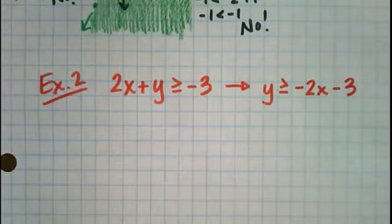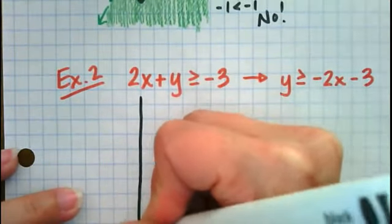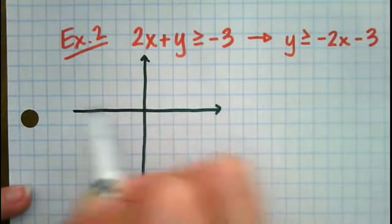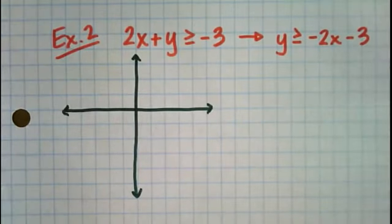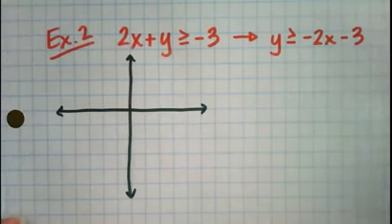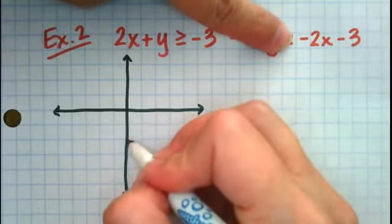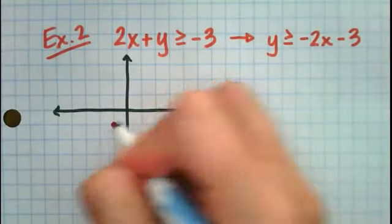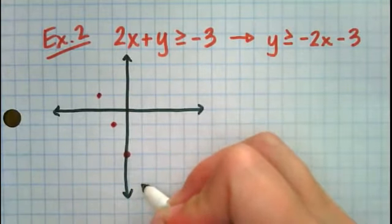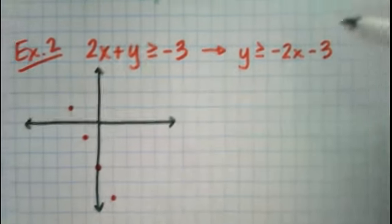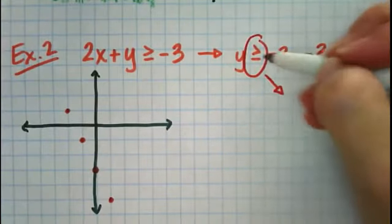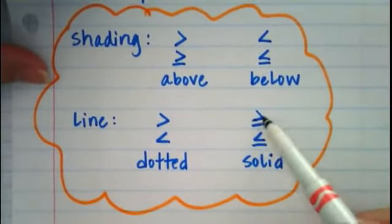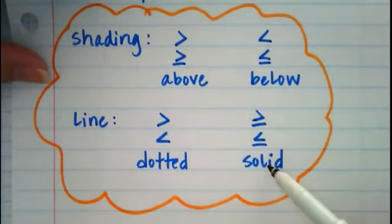Now we sketch a graph. To graph this line, I'm going to start at the y-intercept of negative 3. The slope is negative 2, which is negative 2 over 1 — so up 2, left 1; or down 2, right 1. Before I draw my line, I look at the symbol: greater than or equal to means I use a solid line and shade above. So I draw a solid line, then shade above.